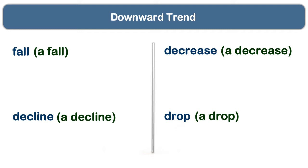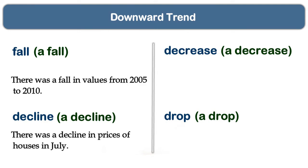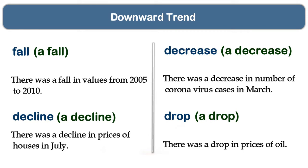When using nouns, we start the sentence with 'there.' There was a fall in values from 2005 to 2010. There was a decline in prices of houses in July. There was a decrease in number of coronavirus cases in March. There was a drop in prices of oil.